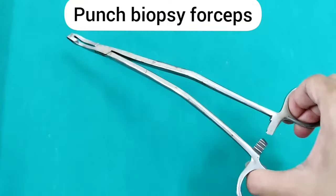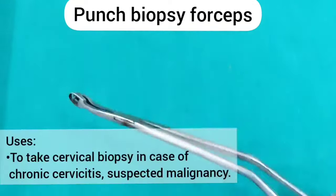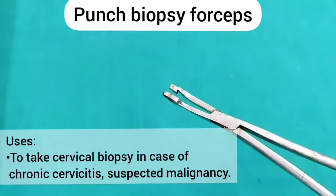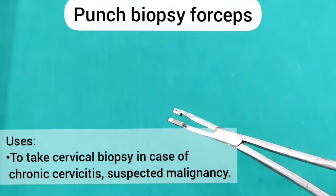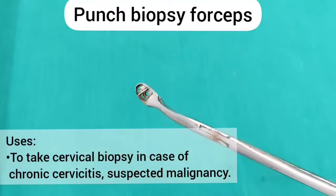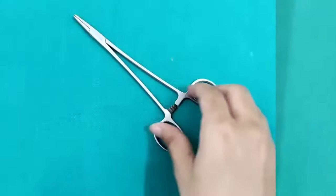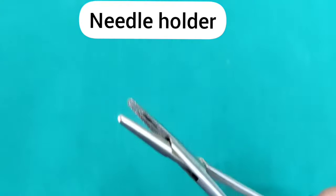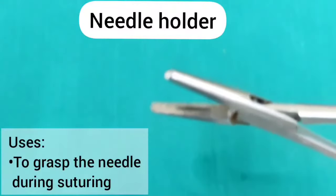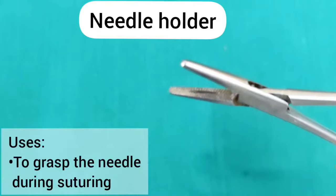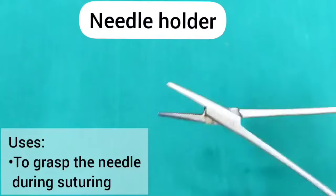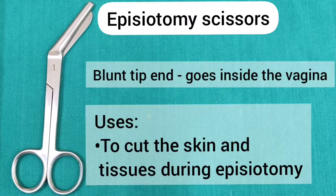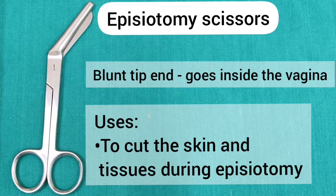This is a punch biopsy forceps, which is used to take cervical biopsy in case of chronic cervicitis or suspected malignancy. Needle holder — it is used to grasp the needle during suturing. An episiotomy scissor is used to cut the skin and tissues during episiotomy; the blunt tip goes inside the vagina.